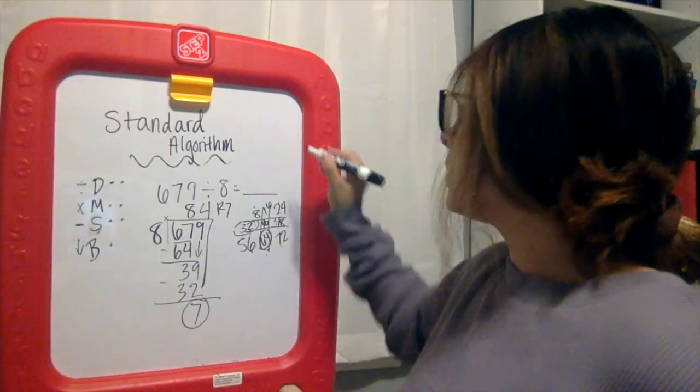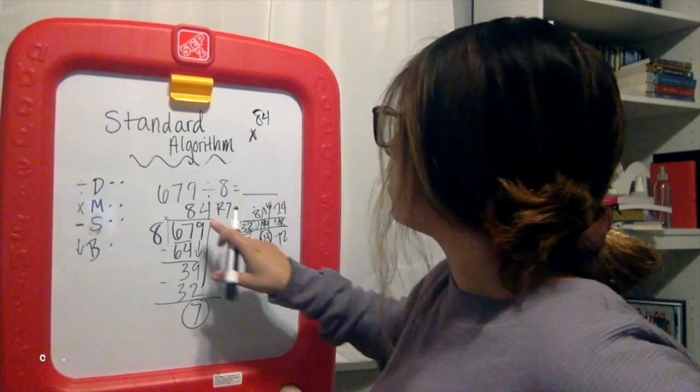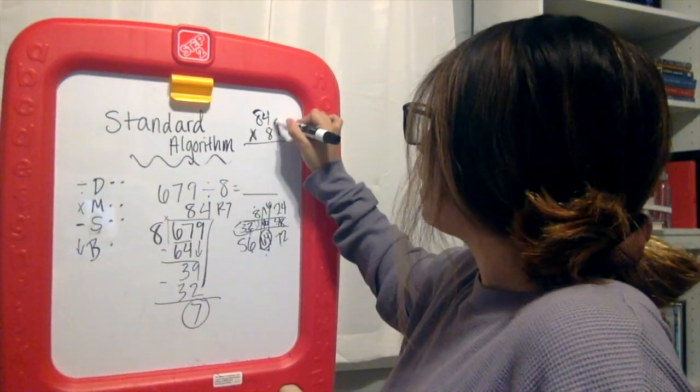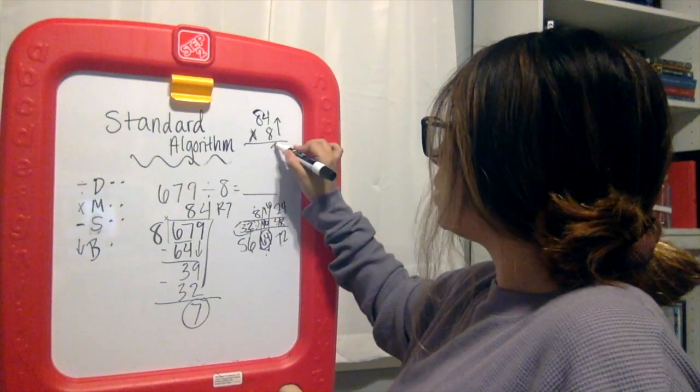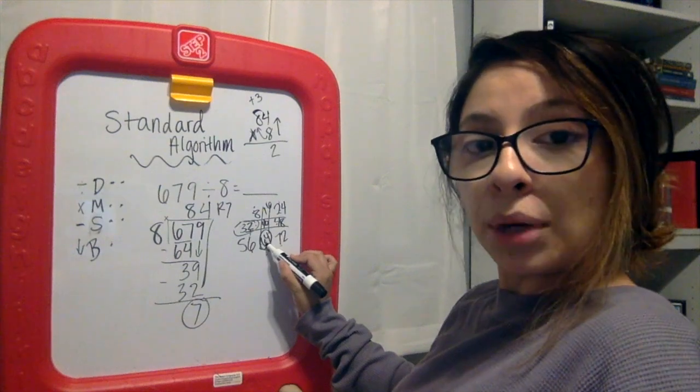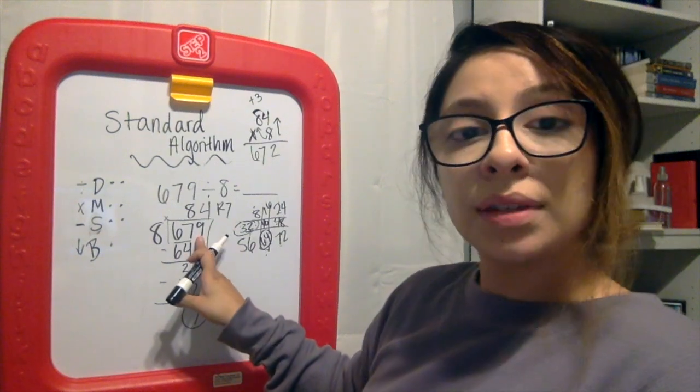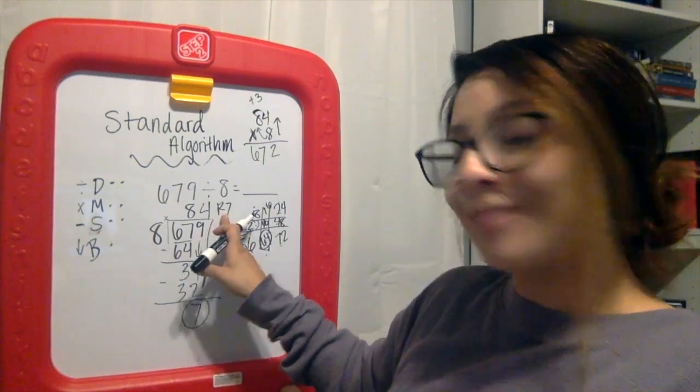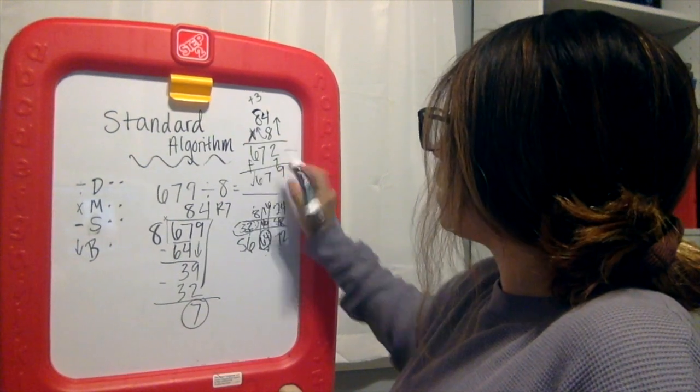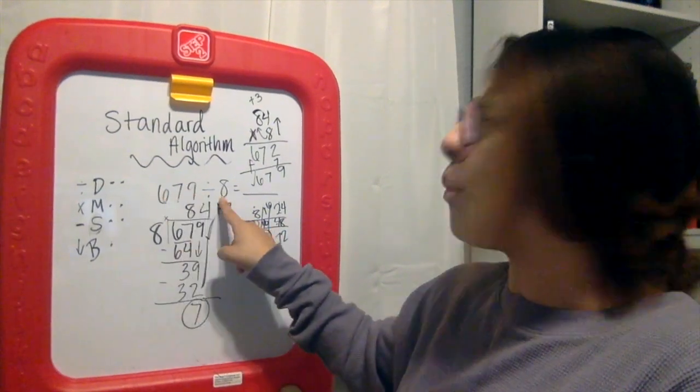And now we like to check. So we should be doing 84 - oops, that's the times. Remember 84 is our quotient, so we're multiplying it by our divisor, which is 8. 8 times 4, if we don't know we're coming back here, 32. Here are your 3 tens. 8 times 8, if we don't know, 64 plus 3, 65, 66, 67. But Ms. LaFuente, I didn't get 679. Well, ask yourself, did you add your remainder? So add your 7, and now we should get 679. Awesome.